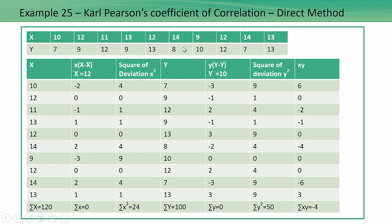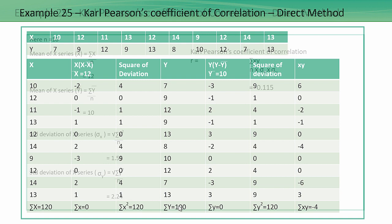Now I will list down my Y values given to me. Then I will find out small y, which is Y minus Y-bar, square this column and list it down. The last column is x times y — this column multiplied by that column. First, I have listed the X and Y values and done a summation: summation of X is 120, summation of Y is 100.